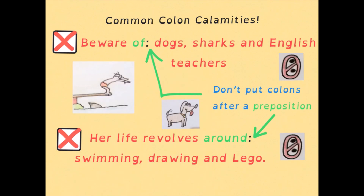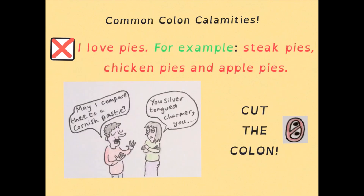Building on our last two slides revealing common mistakes — here's another one: don't put a colon after a preposition such as in, on, under, around, to, by, or whatever. So long, colon — you're dead weight here, just get lost. Even your Oxbridge candidates seem to struggle with stitching 'for example' into a sentence properly. The wrong way: 'I love pies, for example: steak pies, chicken pies, and apple pies.' Obviously you have to cut the colon.